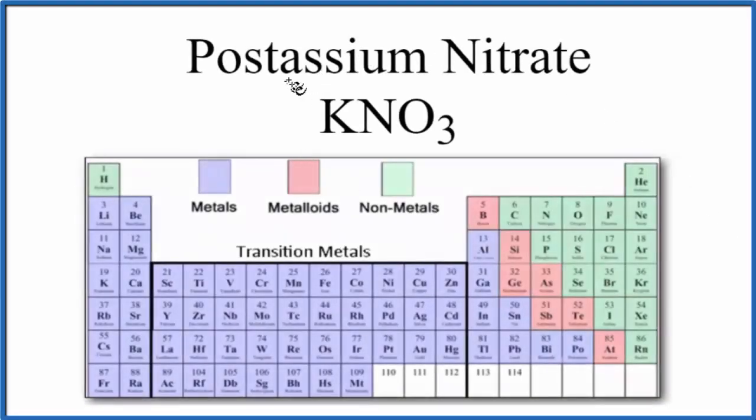In this video we'll look at whether potassium nitrate (KNO3) is ionic or covalent. The short answer is that overall KNO3 is an ionic compound, but within the nitrate ion we'll have covalent bonds between the nitrogen and oxygen atoms.